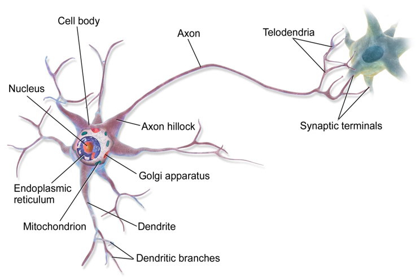Numerous microscopic clumps called Nissl bodies or Nissl substance are seen when nerve cell bodies are stained with a basophilic dye. These structures consist of rough endoplasmic reticulum and associated ribosomal RNA. Named after German psychiatrist and neuropathologist Franz Nissl, they are involved in protein synthesis, and their prominence can be explained by the fact that nerve cells are very metabolically active. Basophilic dyes such as aniline or hematoxylin highlight negatively charged components and bind to the phosphate backbone of the ribosomal RNA. Some neurons also contain pigment granules, such as neuromelanin, a brownish-black pigment that is a by-product of synthesis of catecholamines, and lipofuscin, a yellowish-brown pigment, both of which accumulate with age.